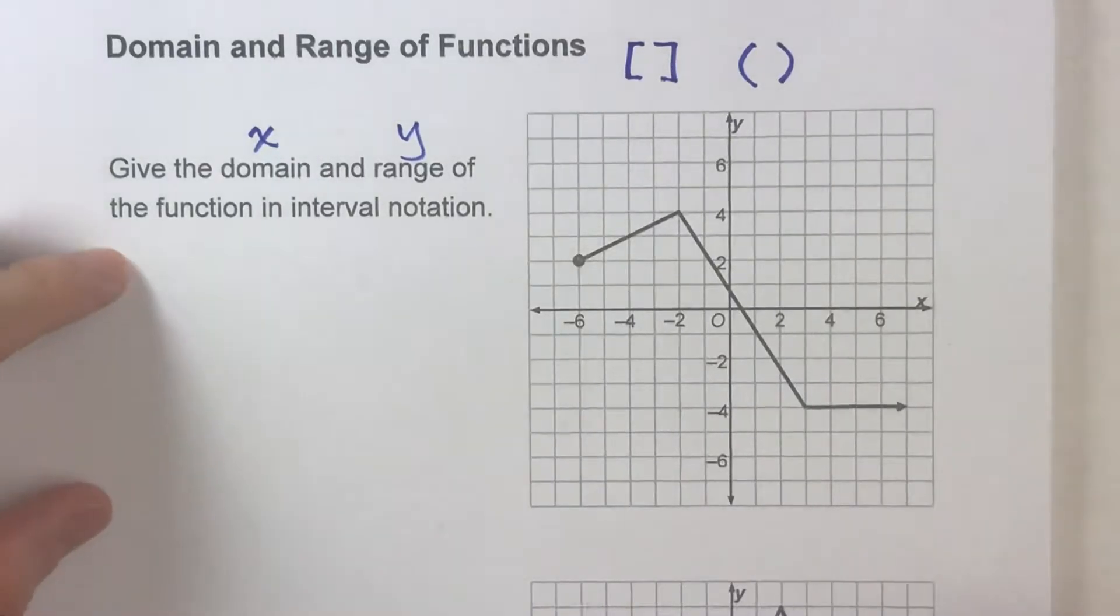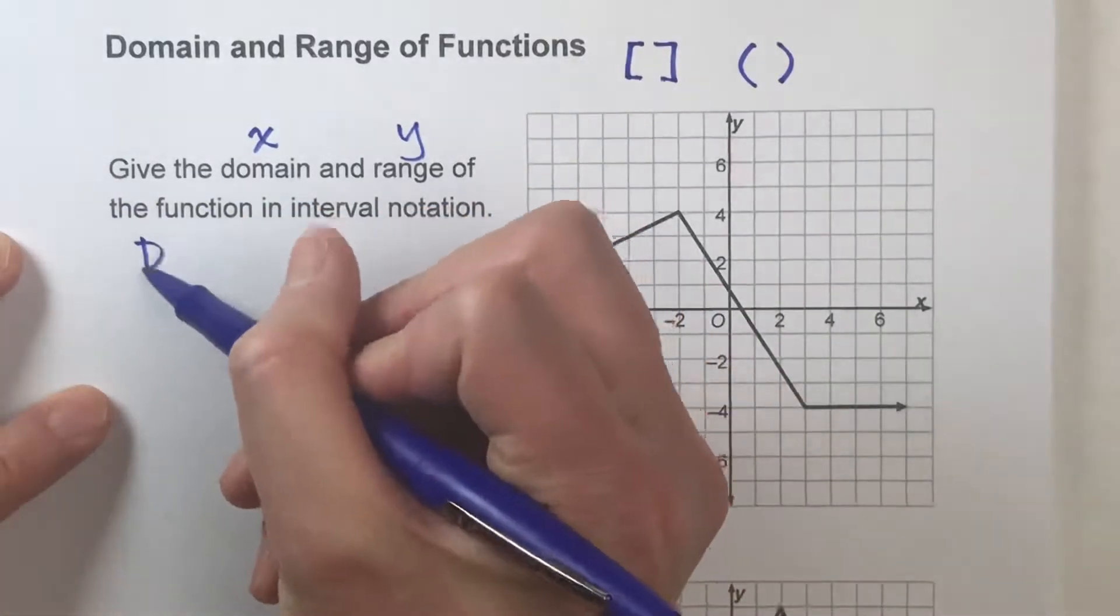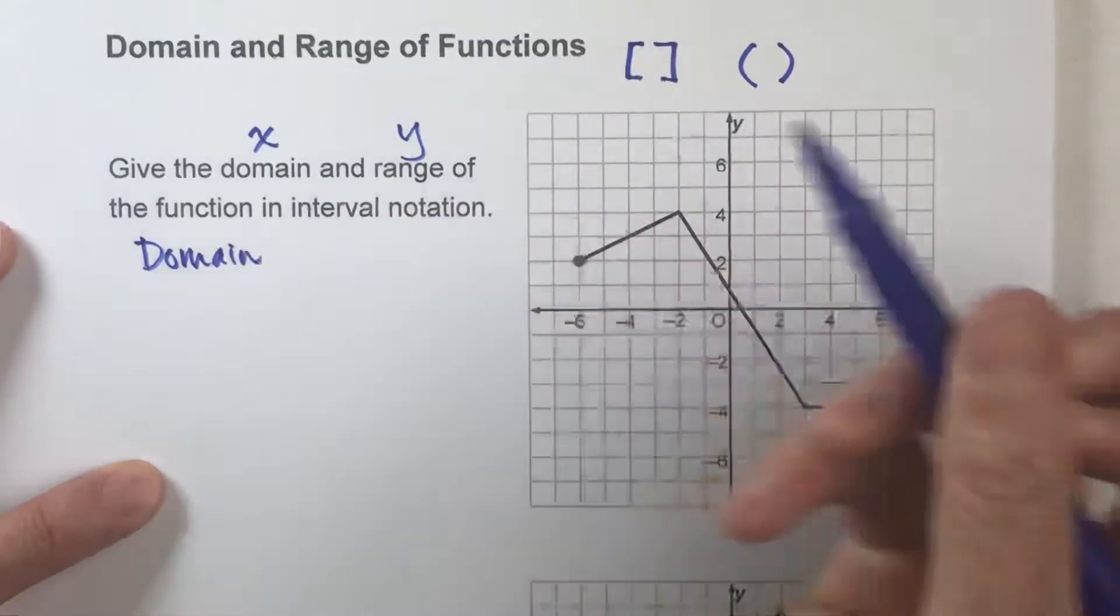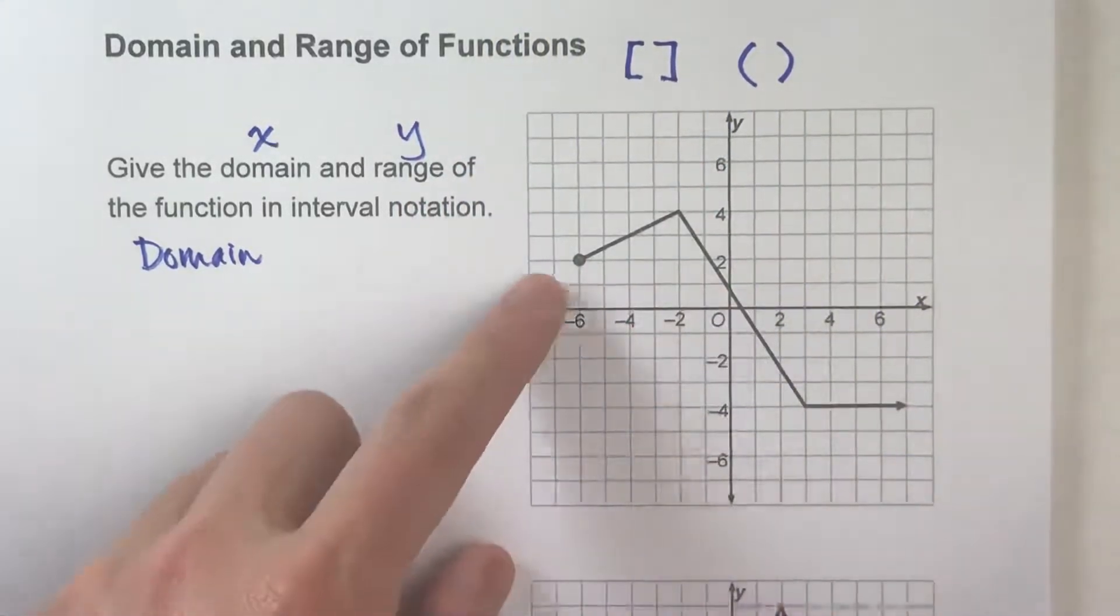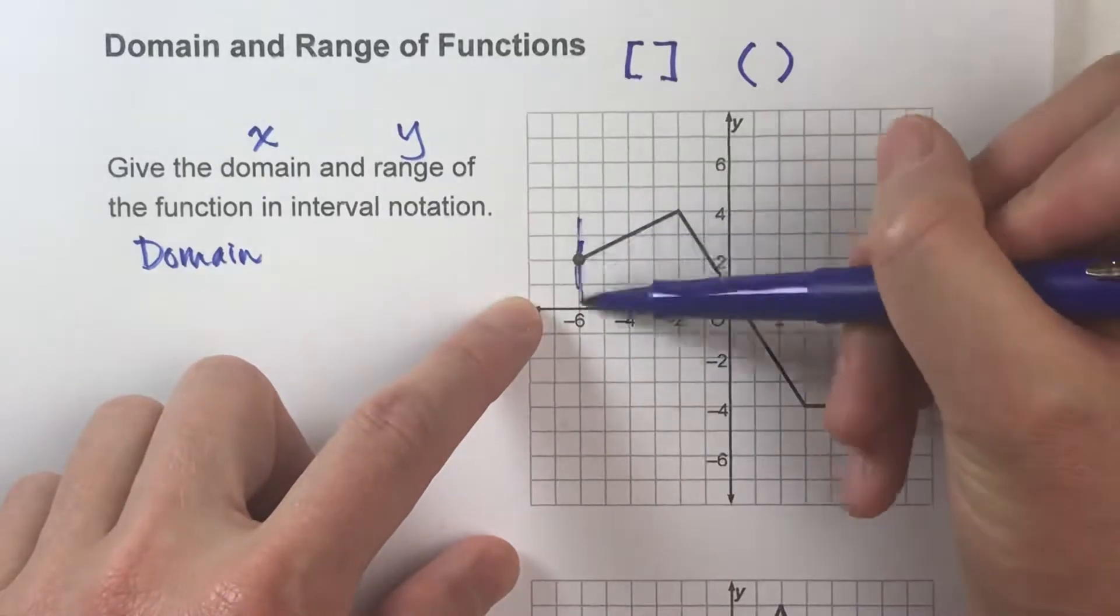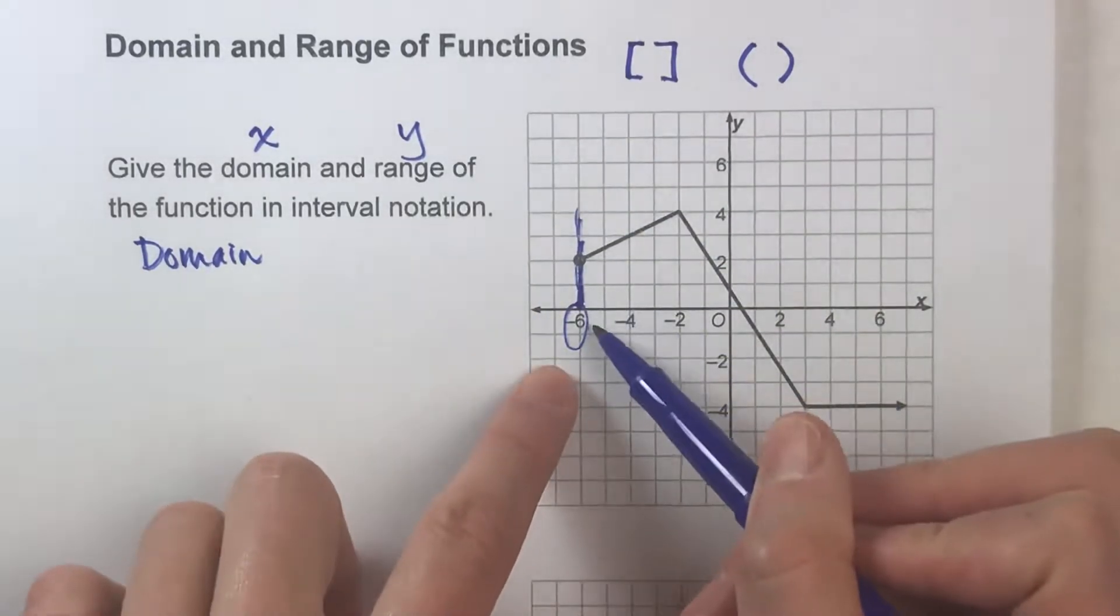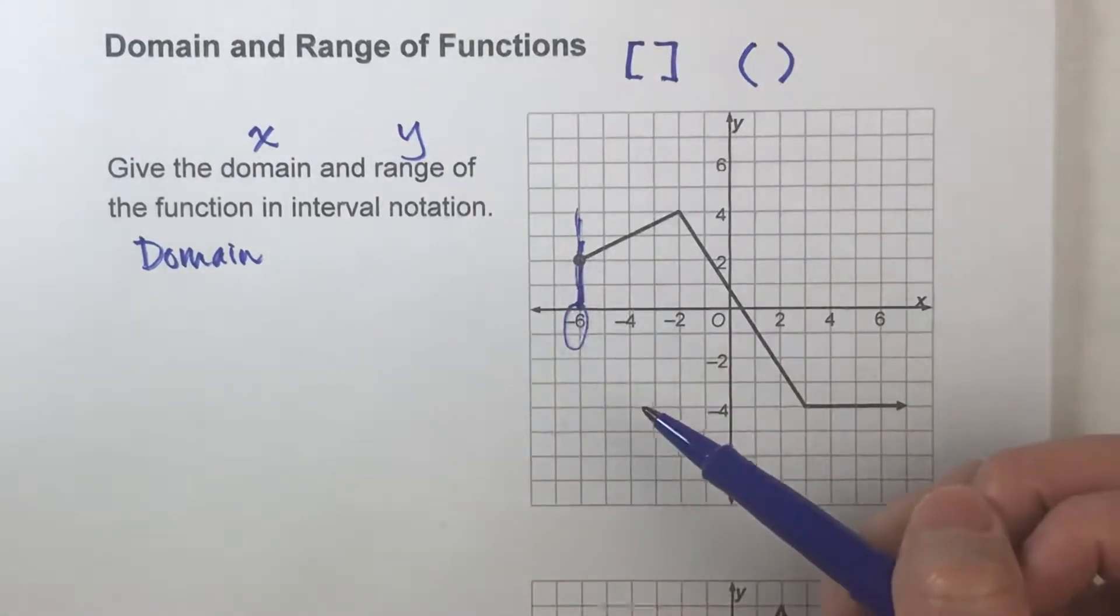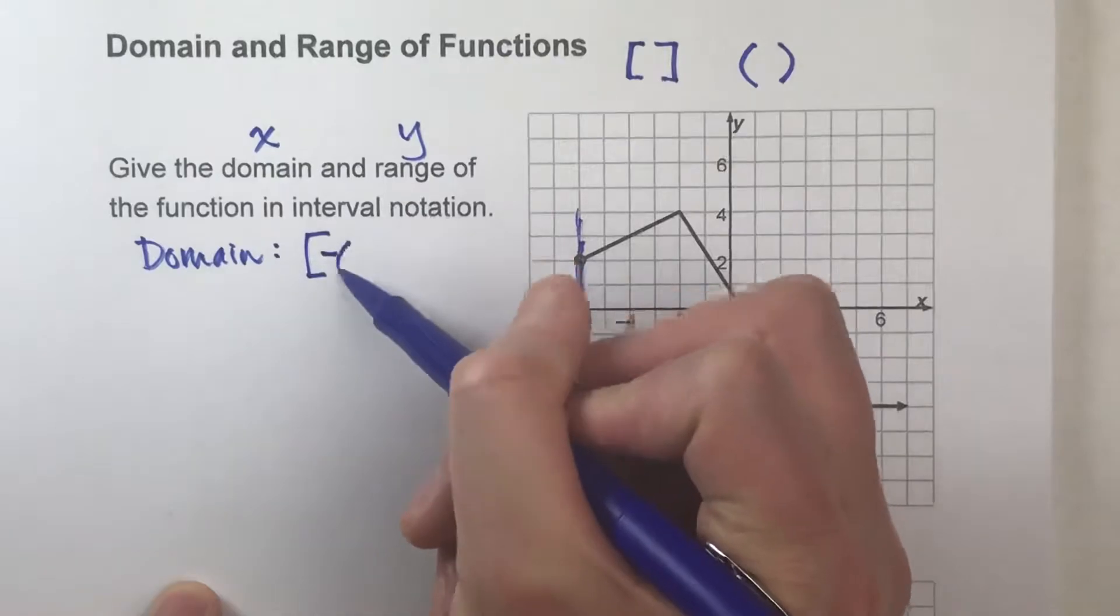So let's do this example together. We're going to give the domain and range of this function here. Let's start with the domain. Now, what possible x values can this be? So focusing on side to side, notice the smallest x value can be is right here, and that's at negative 6. Can it be negative 6? Yes, it can, because there's a point there. So I'm going to use the bracket and negative 6.